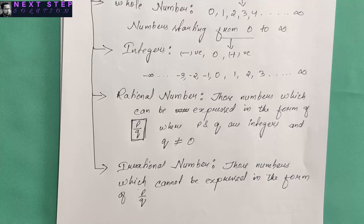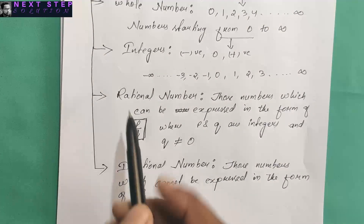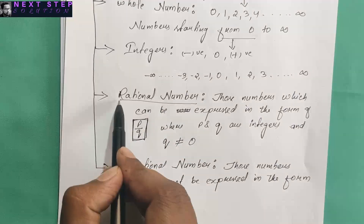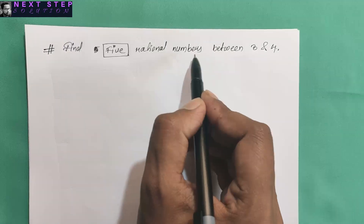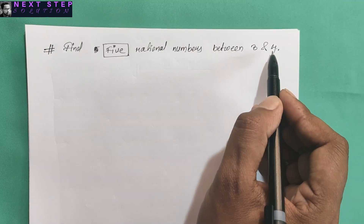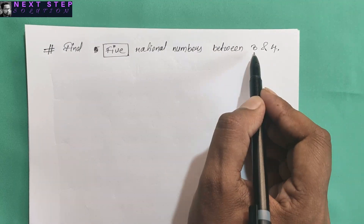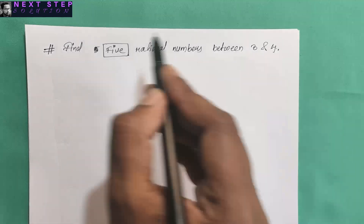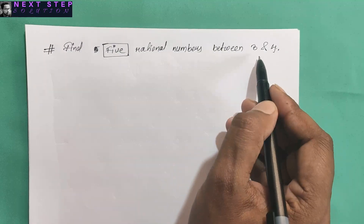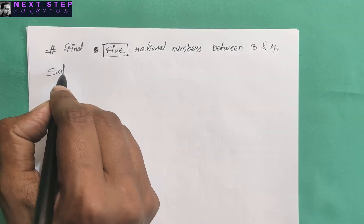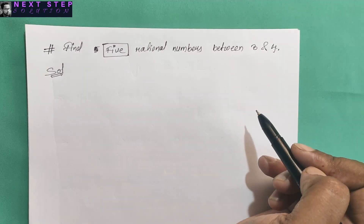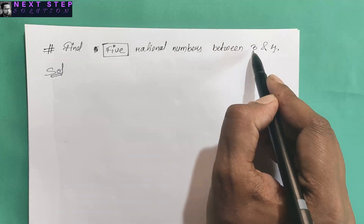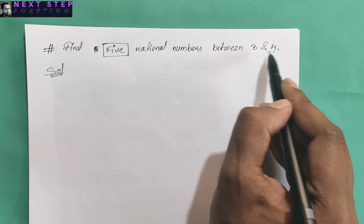Now we can start with the practical part. The first thing we are going to do is finding rational numbers between two rational numbers. For example, find five rational numbers between three and four. We can find as many rational numbers between two rational numbers as we want. There are two types of questions here: one with the same denominator and one with different denominators.